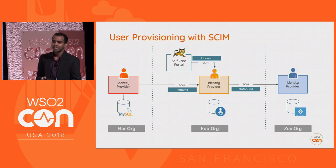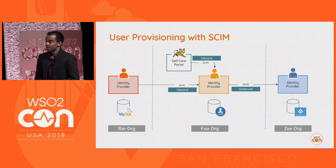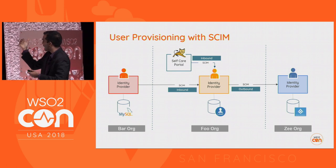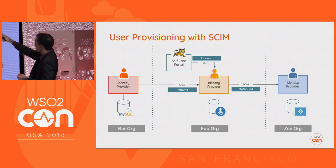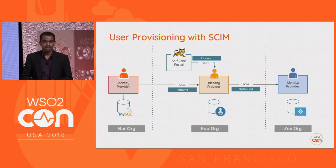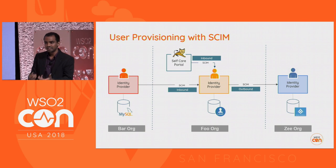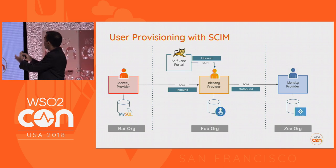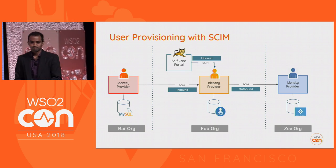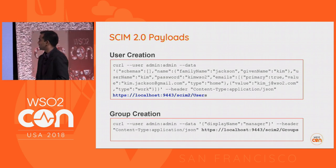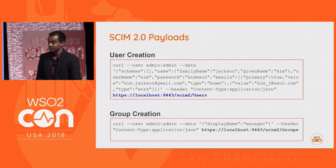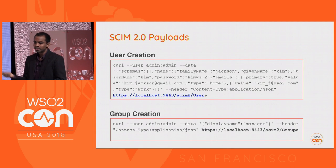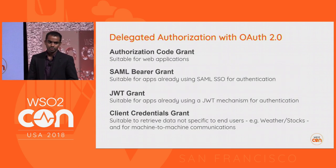SCIM is the de facto REST standard for user provisioning, with both inbound and outbound support. When a customer first self-registers, it's an inbound call to the IAM provider, and simultaneously that identity can be provisioned somewhere else. Sample payloads are straightforward JSON — you send user details and group details, associate them, and do all CRUD operations with SCIM.